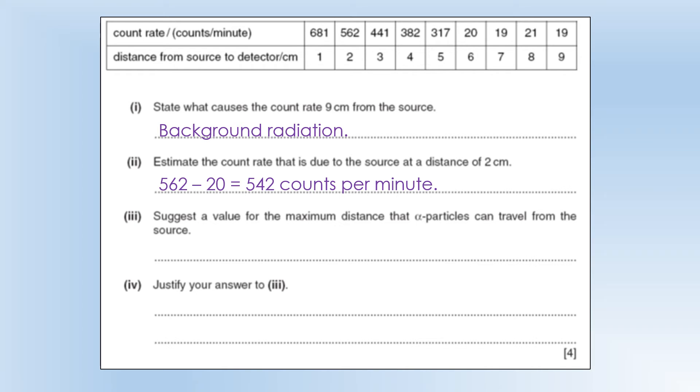Suggest a value for the maximum distance that alpha particles can travel from the source. So I reckon anything over five would be it, and the reason being the count rate drops from being quite a high, 317, to suddenly just being background. So it's got to be somewhere between five and six centimetres, the range.